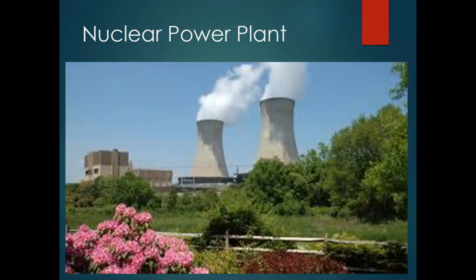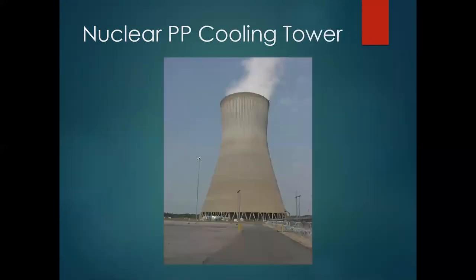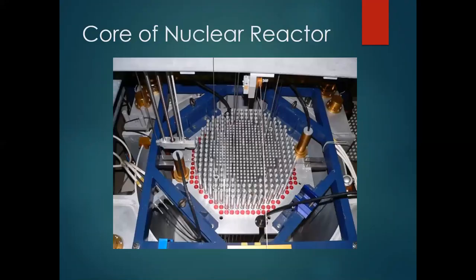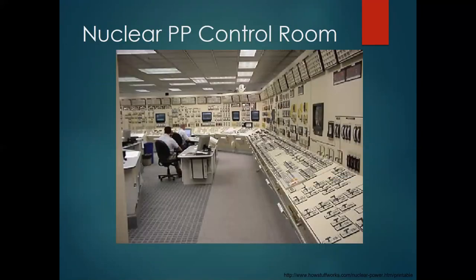This is our nuclear power plant — the one in Limerick. We're going to talk about some of the obvious parts you see and some not-so-obvious parts. This is a cooling tower — what you see coming out of the top is water vapor; no radioactive material is ever allowed to exit the nuclear power plant. This is the core of a nuclear reactor — these rods contain the uranium. And this is the control room, which really is very similar to what the control room looks like at Limerick.